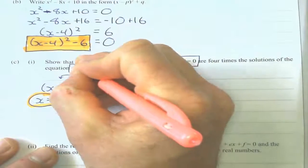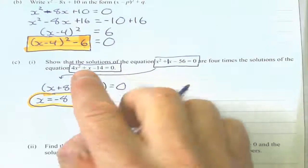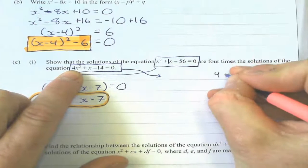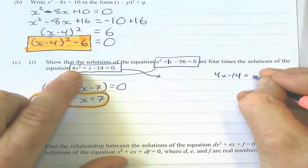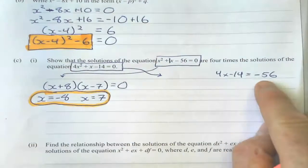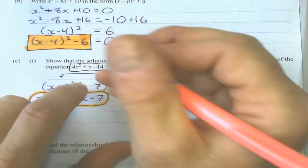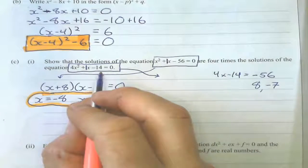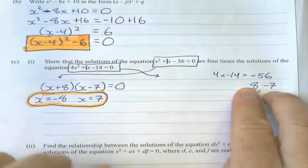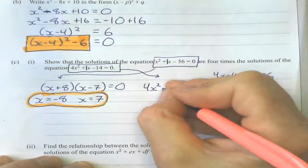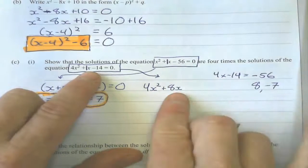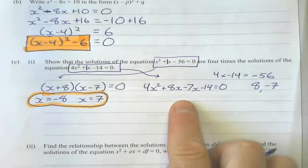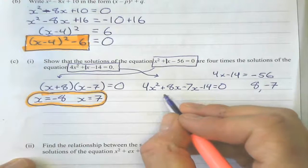My next equation is a harder factorizing one. I could use the quadratic formula or a graphics calculator, but I'm just going to factorize it. The way I do that is I multiply 4 times negative 14, which gives me negative 56. Two numbers that multiply to get negative 56 and add to get positive 1 are positive 8 and negative 7. What I do with that is rewrite the middle term using these two coefficients — so 4x squared, then plus 8x minus 7x, then minus 14, equals 0.